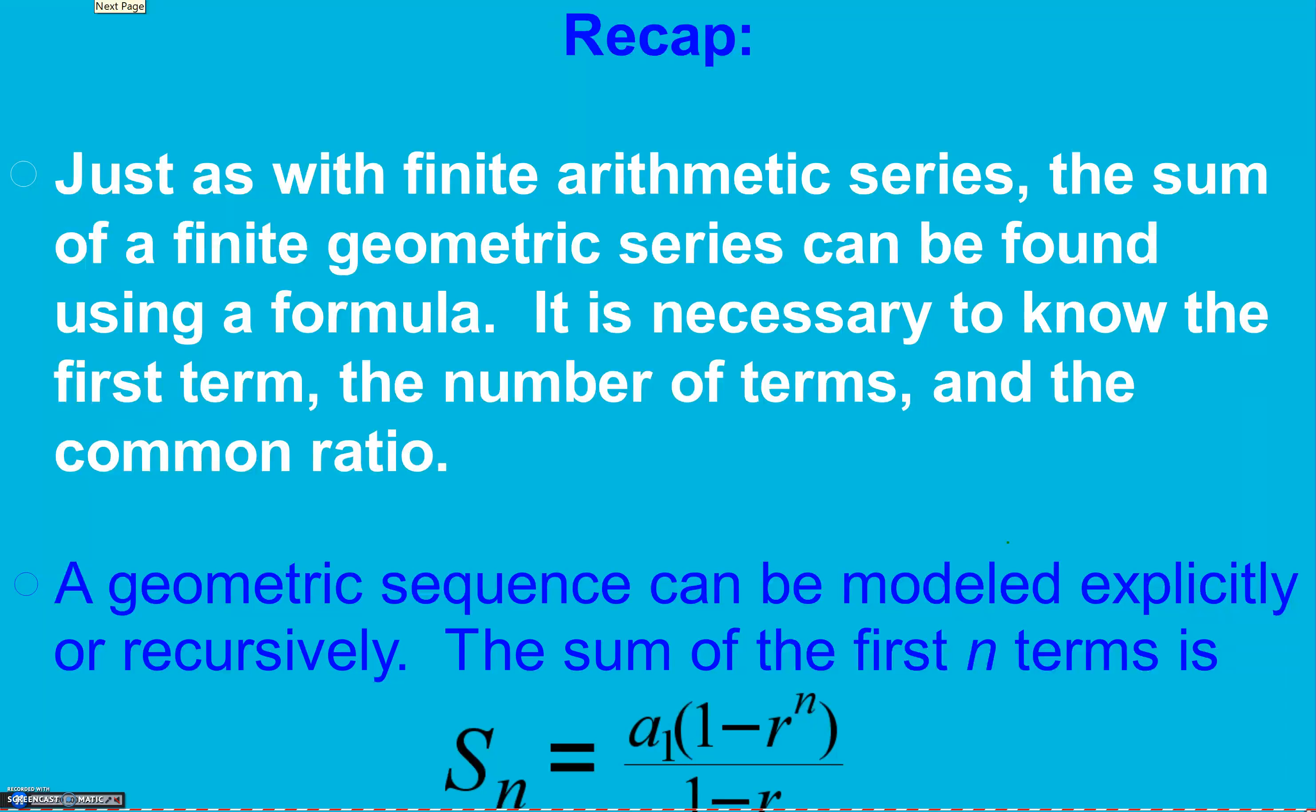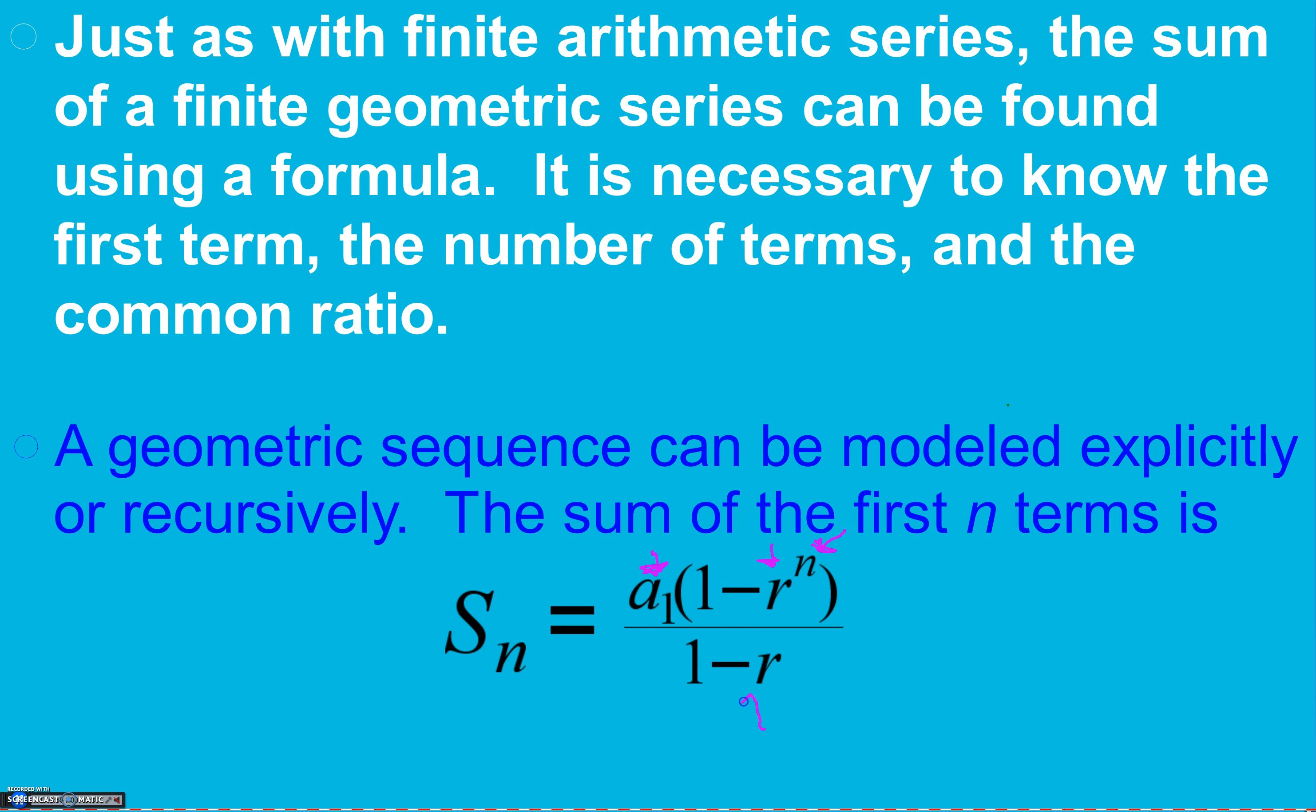Quick recap here. Just as with finite arithmetic series, the sum of a finite geometric series can be found using a formula. It's necessary to know the first term, the number of terms, and the common ratio. A geometric sequence can be modeled explicitly or recursively. The sum of the first n terms is our first term times one minus our common ratio to the number of terms power divided by one minus common ratio.